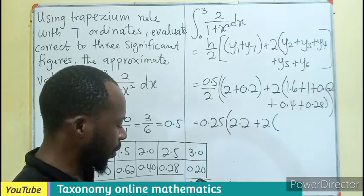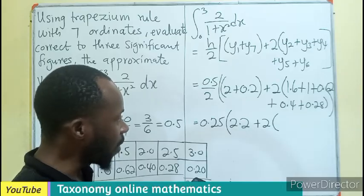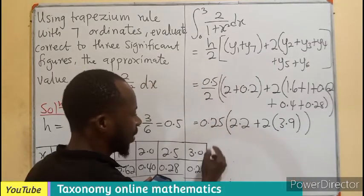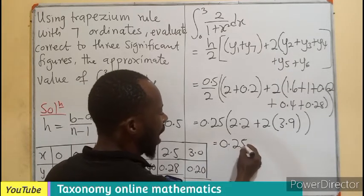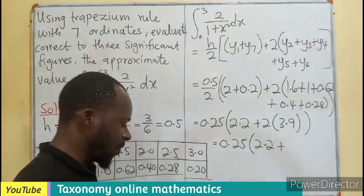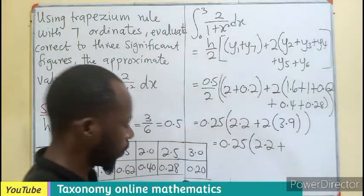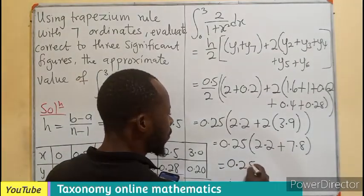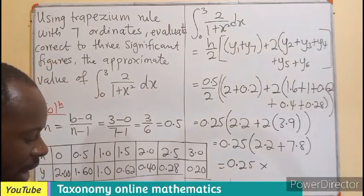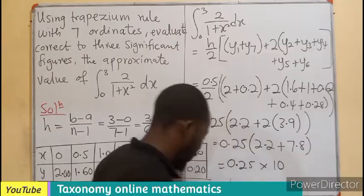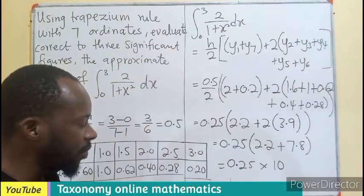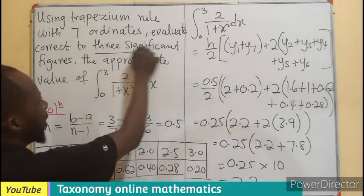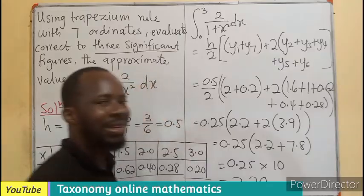Plus 2 into bracket the addition: 1.6 plus 1 plus 0.62 plus 0.4 plus 0.28, which gives us 3.9, times 2 gives 7.8. So this will be 0.25 multiplying 7.8 plus 2.2, that's 10. Now 10 times 0.25 gives 2.5.